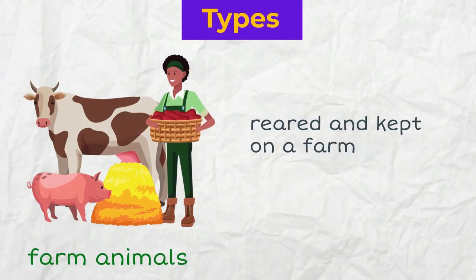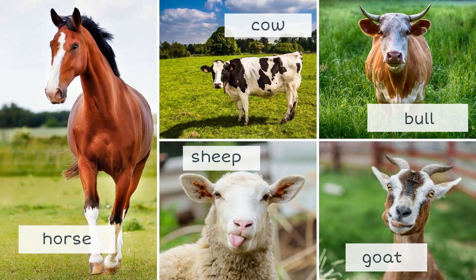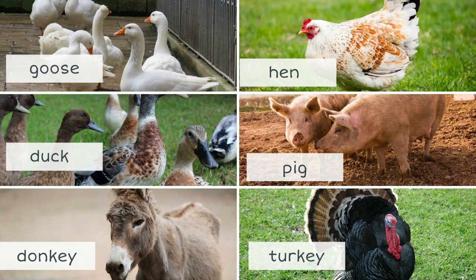Some domestic animals are also called farm animals because they are reared and kept on a farm. Among them are a horse, a cow, a bull, a sheep, a goat, a goose, a duck, a donkey, a hen, a pig, a turkey.